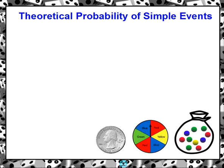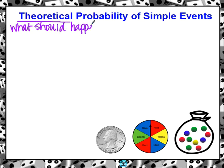Today we're going to talk about theoretical probability of simple events. Theoretical probability is what should happen — we haven't done the event yet, we haven't done the experiment. We're talking about in a perfect world what should happen.